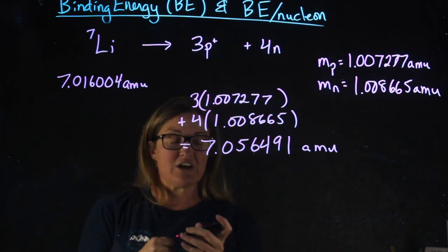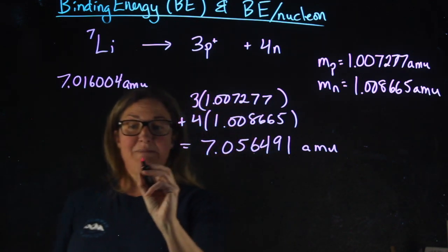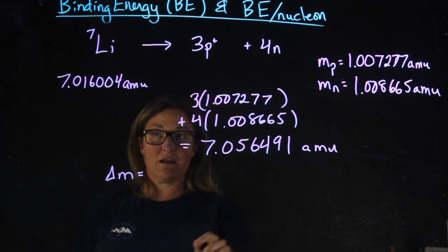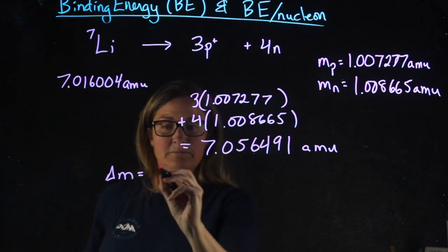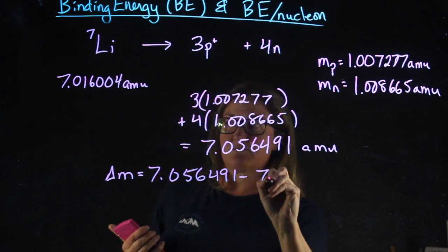If I want to figure out how much energy it takes, I need to figure out what my change in mass is. The change in mass is frequently called the mass decrement. To find the difference between these two values, I'm simply going to subtract them.